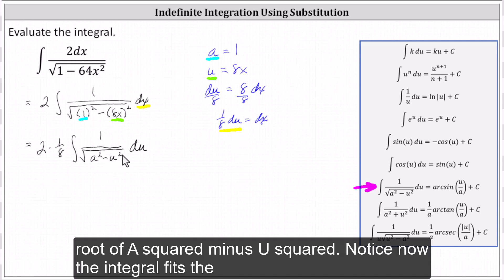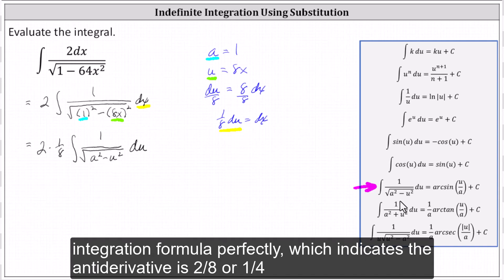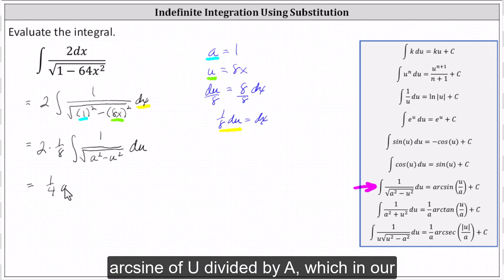Notice now the integral fits the integration formula perfectly, which indicates the antiderivative is two-eighths, or one-fourth, arcsine of u divided by a, which in our case is 8x divided by 1, or just 8x plus C.